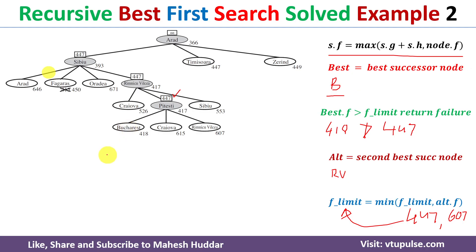We consider Bucharest and check whether it is the goal node. Bucharest is the goal node, so the algorithm returns the solution. The optimal path found is: Arad → Sibiu → Rimnicu Vilcea → Pitesti → Bucharest, with a total cost of 418.